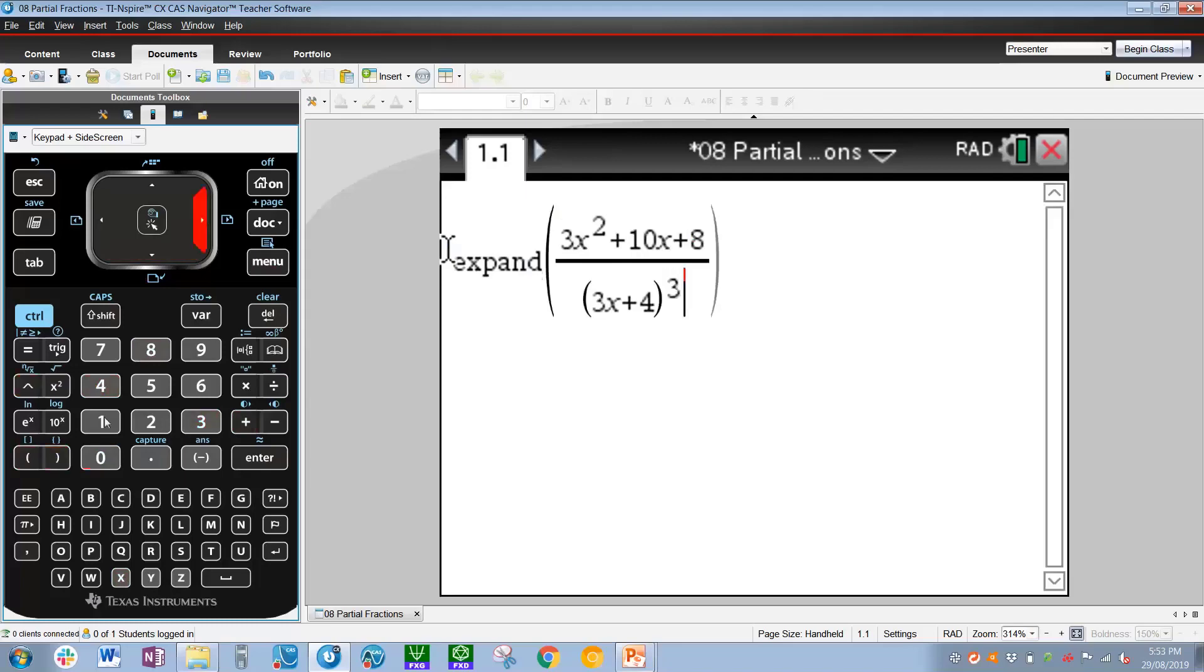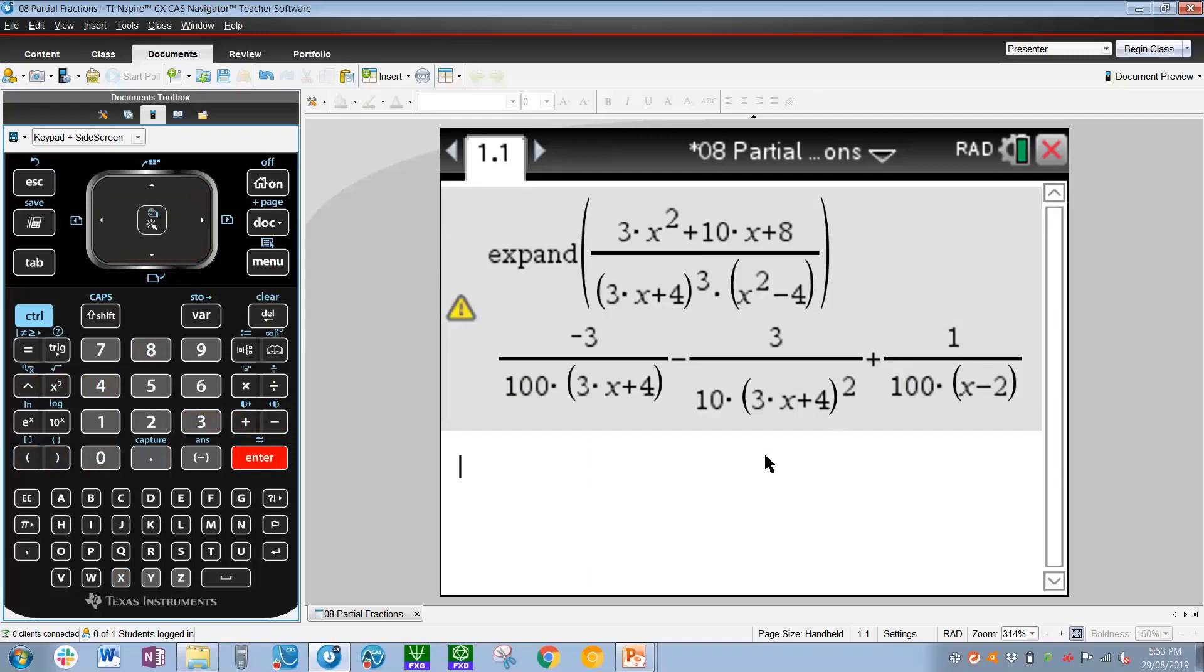Press right arrow, and then open bracket x squared minus 4. Then you simply have to press enter, and we get the form of the partial fractions here.